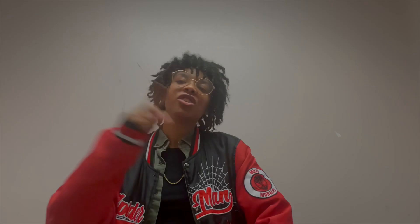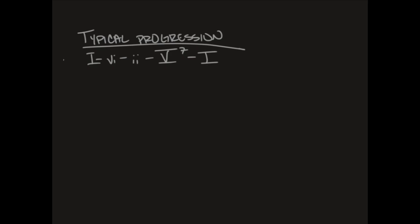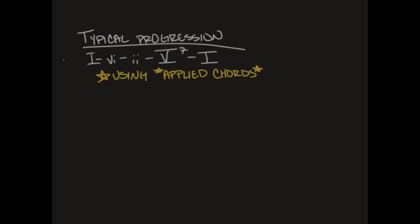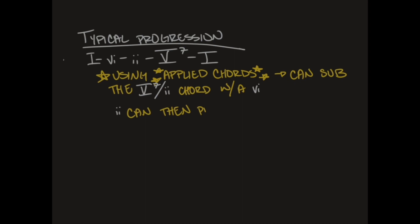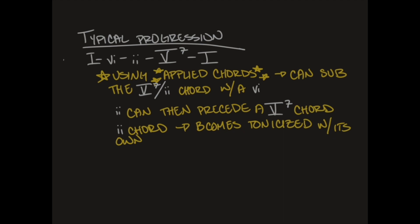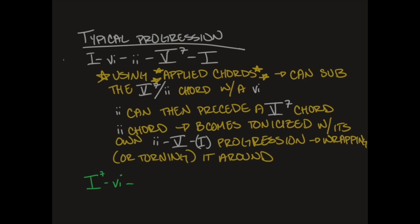The turnaround is a great example of the use of applied chords, specifically in how this progression can be applied outside of the tonic or home key. The turnaround is a progression that helps loop us back to the original key. Here we have a typical progression. Using applied chords, we can sub the 5-7-2 chord with a 4 chord, and with the 2 chord, we can proceed the 5-7. The 2 chord can then be tonicized with its own 2-5-1 progression, wrapping it back into the original key.